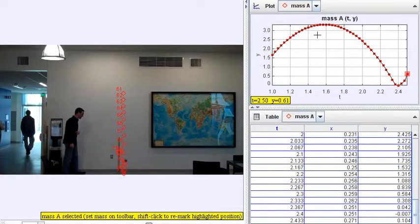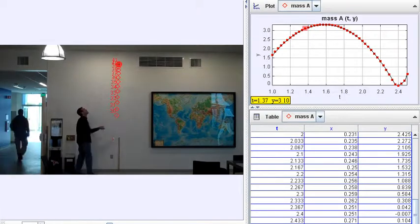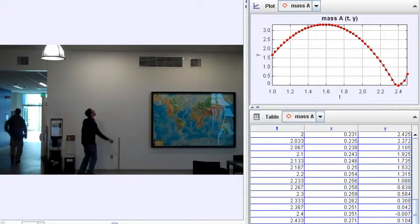So here we have the time along the horizontal. We're starting at time 1 here because the ball is released 1 second into the video.